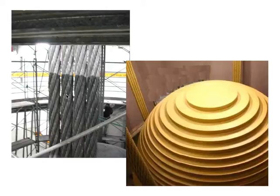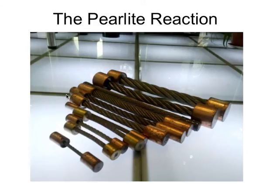The steel ropes you see everywhere are basically pearlite which has been heavily deformed into wire form, and you can get a range of steel rope types.